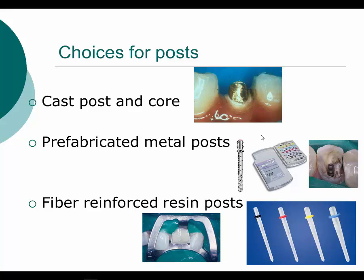Let's look at the choices for posts. The old standby was always the cast post and core with a high or low noble alloy. We can use prefabricated metal posts of various sizes and shapes — in this clinical photograph you can see the tooth has a metal head for retention of the core material. Or we can use a fiber-reinforced resin post, generally a translucent fiber post that transmits light and doesn't create shadowing. Typically we use fiber posts on anterior teeth and premolars where a metal post may interfere with the aesthetics of the final all-ceramic restoration.